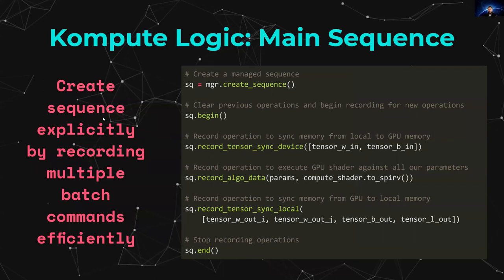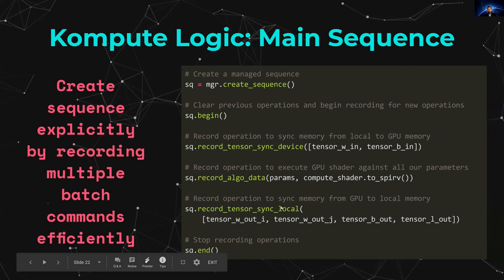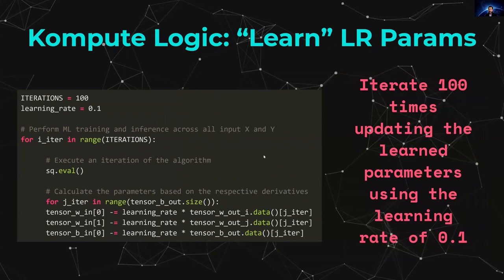We then create and record the operations in the sequence. First, we sync the data to device for the two tensors containing parameters, since the parameters are updated every iteration and need to be in GPU device memory. We then record the algorithm — the logistic regression shader — and record a sync to local so that the weights, parameters, and loss are copied back to the host so Python can see them.